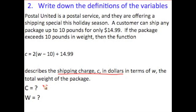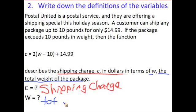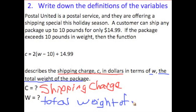C is the shipping charge. We can go ahead and write that down: shipping charge. In terms of W, the total weight of the package — they told us what W is too. So we know W, and it's important that you use the word 'total' because it indicates the entire weight of the package, not part of the package, but the whole thing. So: the total weight of the package.